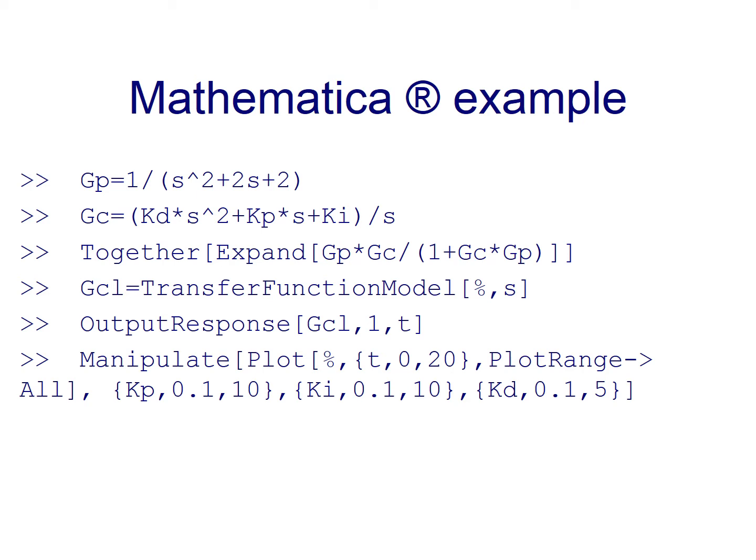In such a way that the closed loop transfer function Gcl is declared as a transfer function model, which is again a built-in instruction for Mathematica. And we just declare this as a transfer function model, and between brackets we have this percentage sign, which means that we are going to take the immediately above result, and we are taking s as our Laplace transform.